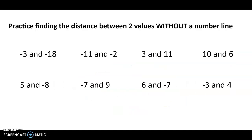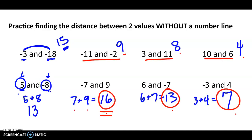You have 8 problems here for practice. Notice the first couple have the same signs — same side of zero — so I'm just looking at how far apart 3 and 18 are: 15 apart. But some problems have a positive and a negative — this takes me 5 to get to zero, and 8 to get to zero on the other side — put those two pieces together: 13 apart. Pause here, finish the six remaining problems, then play when ready to check. Here are the answers — check what you have, paying attention to signs and whether the numbers are on the same side of zero.